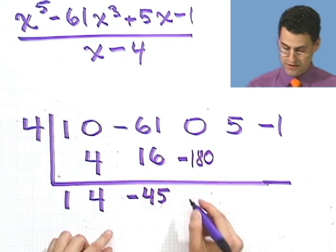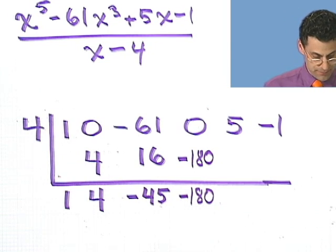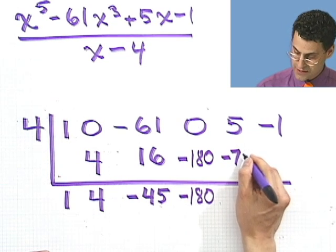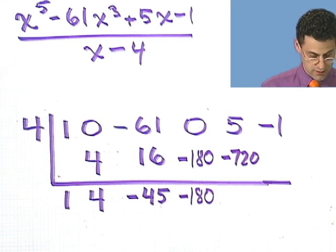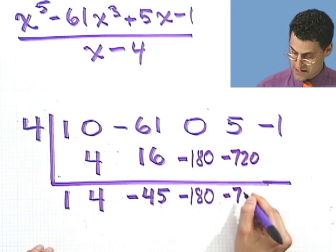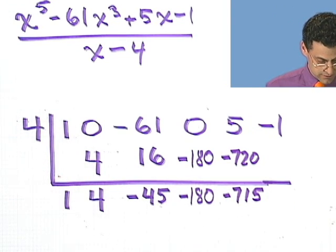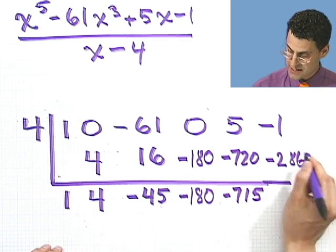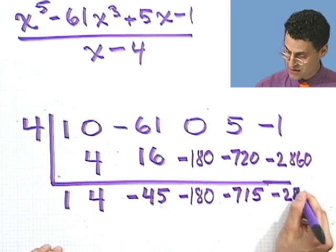Then I add. I take minus 45 and multiply by 4 to get minus 180. Then I add: 0 plus minus 180 gives minus 180. I multiply minus 180 by 4 again and get minus 720. Then I add those things up and get minus 715. Then I multiply that by 4 and get minus 2860. Then I add the minus 1 and get minus 2861.